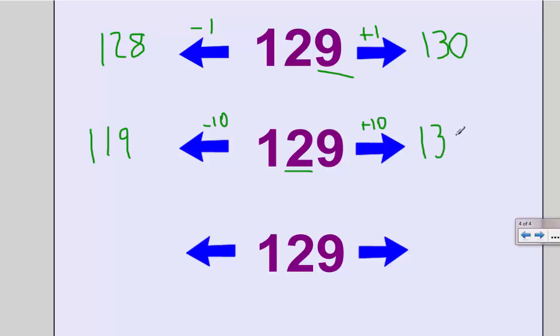Again I'm only affecting the number in my tens place. And likewise a hundred less is going to affect the number in my 100s place. So if I take a hundred away from 100 that leaves me with zero 100, so I would have only 29 left. If I add 100 to 129 that's gonna make two 100s or 229.